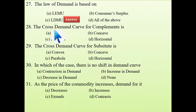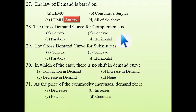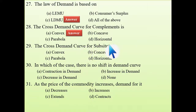Next: the cross demand curve for complements — is it convex, concave, parabola, or horizontal? Take the example of bread and butter. When the price of butter increases, the quantity demanded of butter decreases, and consequently the quantity demanded of bread also decreases. There is a negative relationship between the price of butter and quantity demanded of bread, so the answer is convex, because of that negative relationship.